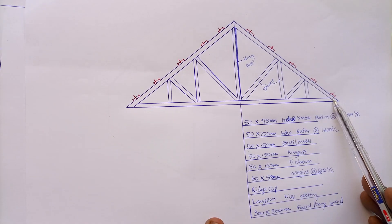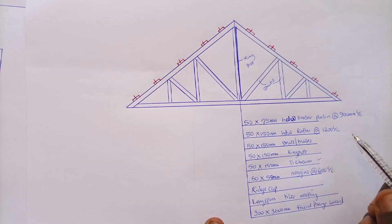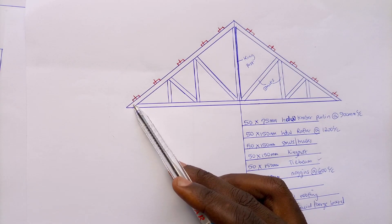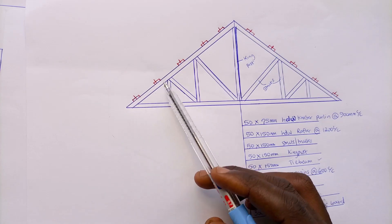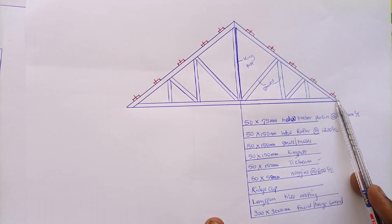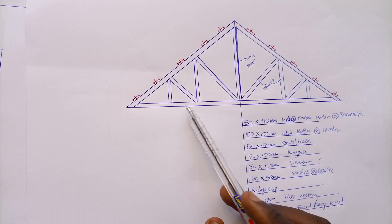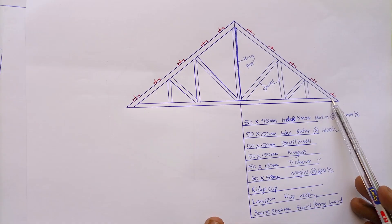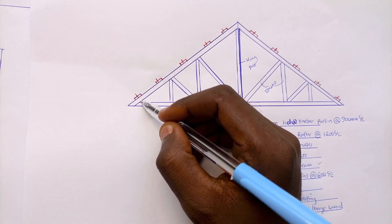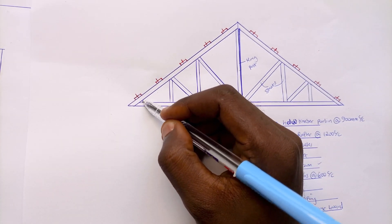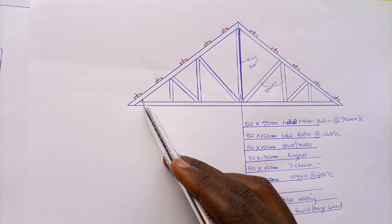This long wood that spans from this side to the other side is what we refer to as the tie beam. The tie beam enhances rigidity between the slanting members. Your tie beam is usually nailed onto your wall plate. So the tie beam links the two wall plates, with the wall plate holding the tie beam in place.